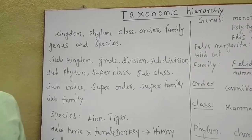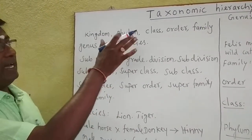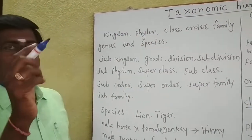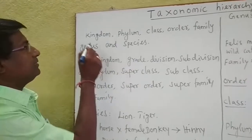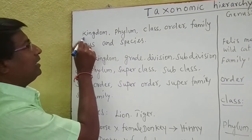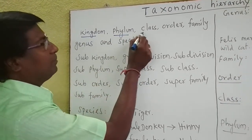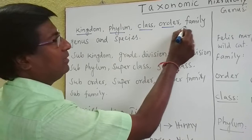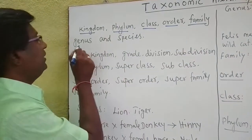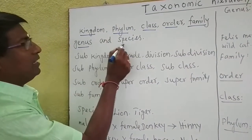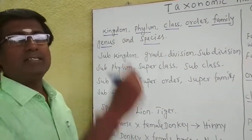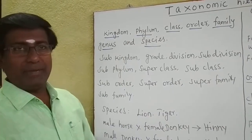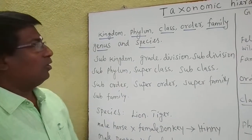There are seven categories in Taxonomic Hierarchy. What are the seven categories? They are: kingdom, phylum, class, order, family, genus, and species. These are the seven categories in Taxonomic Hierarchy.